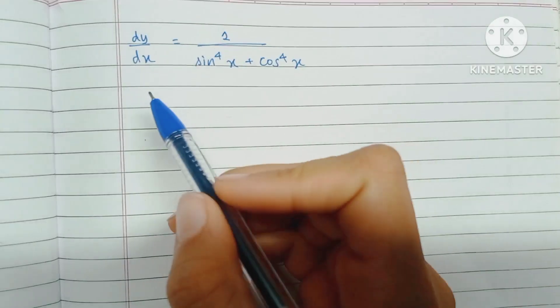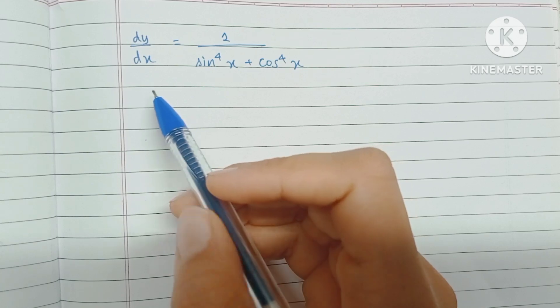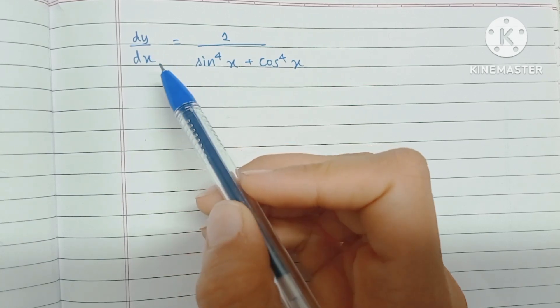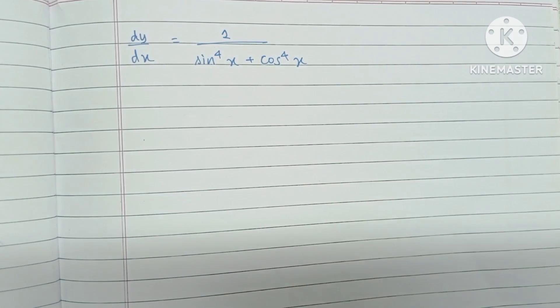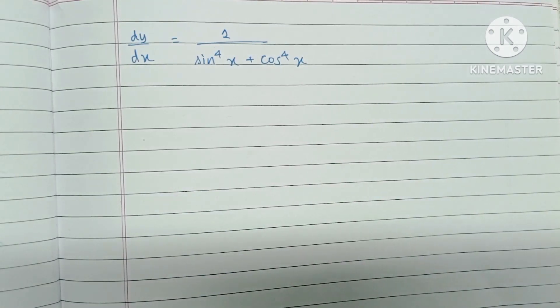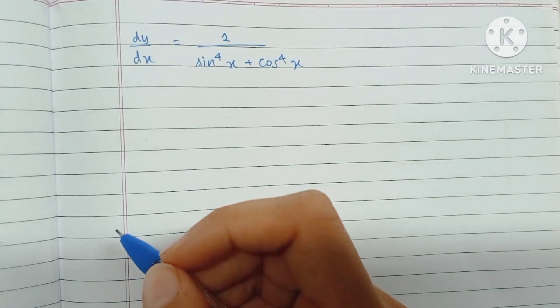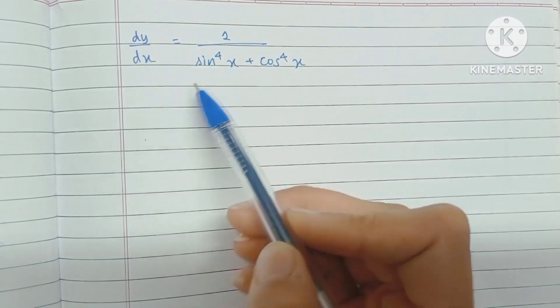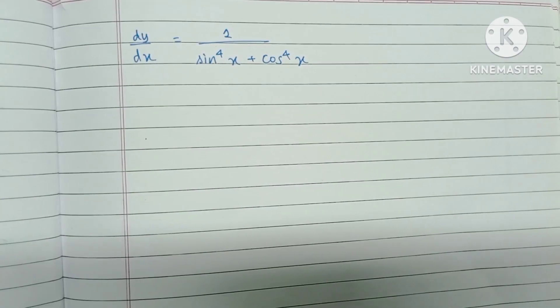Hey guys, today we will be solving this differential equation dy/dx is equal to 1 upon sin raised to 4x plus cos raised to 4x. The main aim is to remove the differential term and bring the equation back to the terms of y and x.